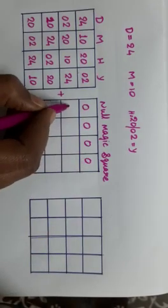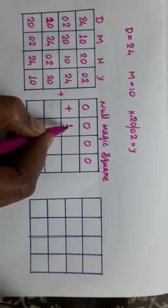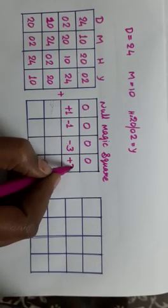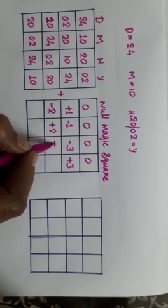So you take here 0 and here plus 1, minus 1, minus 3, plus 3. If you add, you will be getting 0. Minus 2, plus 2, plus 2, minus 2.